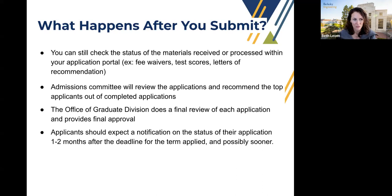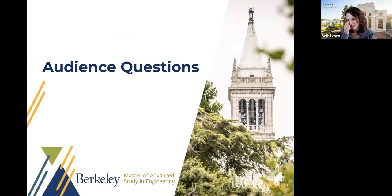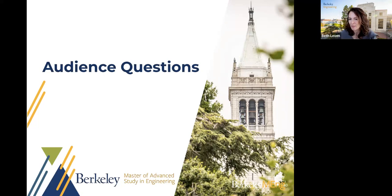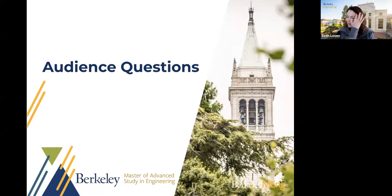Moving to audience Q&A. Felicia and Tarek have been answering questions throughout. One question asks: is the 3.0 GPA requirement for the last two years or overall? The technical minimum is 3.0 for the last two upper-division years of undergraduate education, but generally a 3.0 overall is important. Berkeley's average GPA for professional graduate programs in engineering is 3.5 to 3.7. If you don't have a 3.0, we'd like to hear about why in your personal history essay — context is really important.